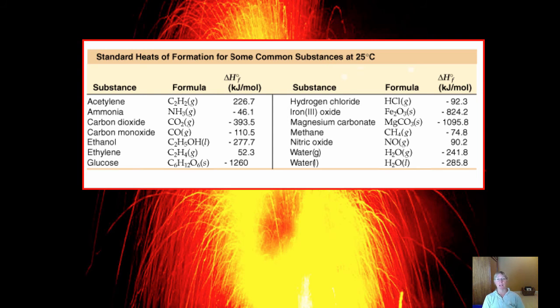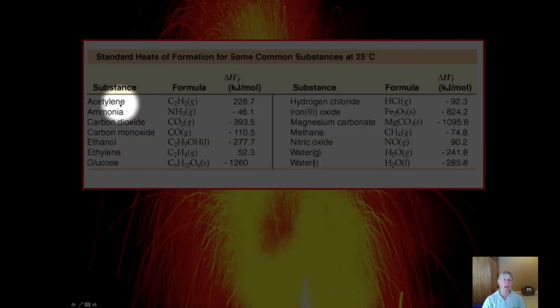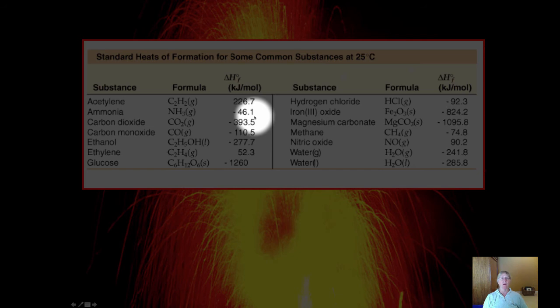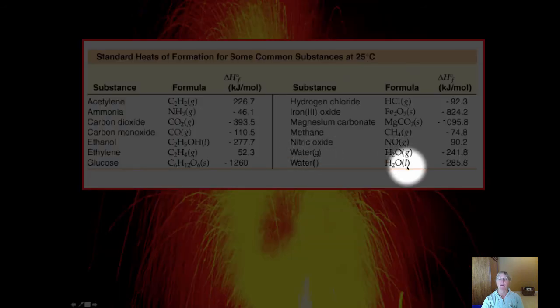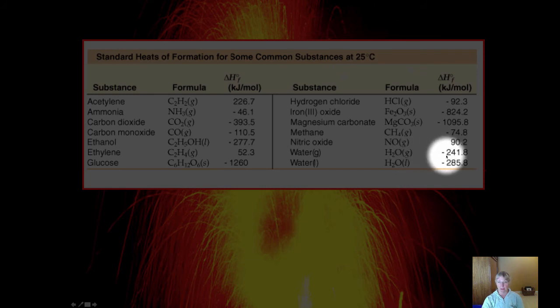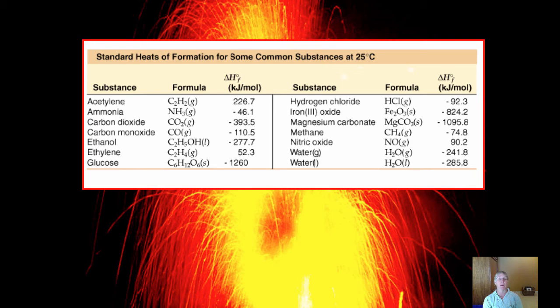Here is a table of some heats of formation at 25 degrees Celsius. Notice that all these substances are compounds. Their heat of formation is expressed in kilojoules per mole. For example, to form one mole of acetylene, you would need 226.7 kilojoules. But when one mole of ammonia forms, you get a net release—that's what the negative sign means—of 46.1 kilojoules for every mole of ammonia that forms. They can be positive or negative. Also notice that heats of formation can be different. Water in its gas phase has a release of 241.8 kilojoules, but if you're making liquid water, it releases a little bit more per mole. Be careful with that when we do Hess's Law in a few days.